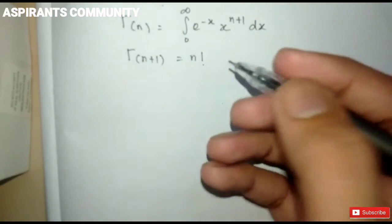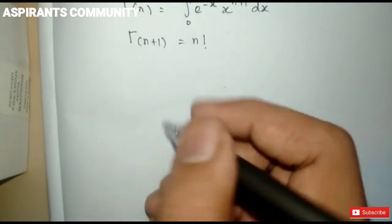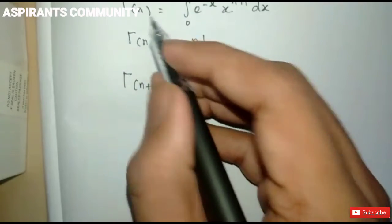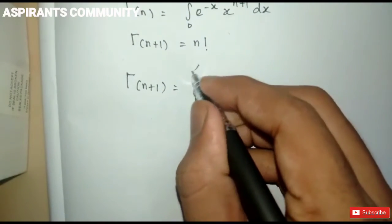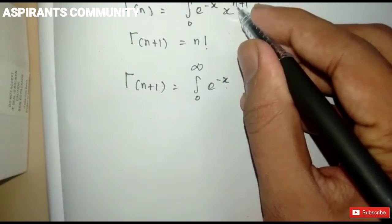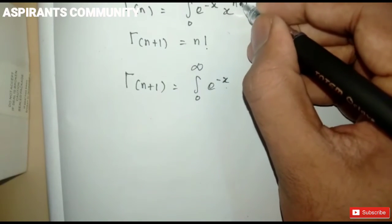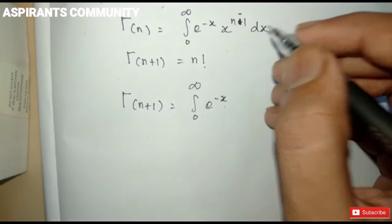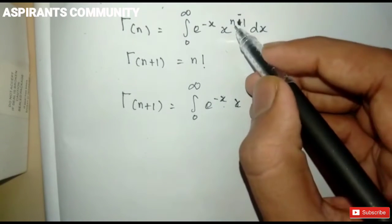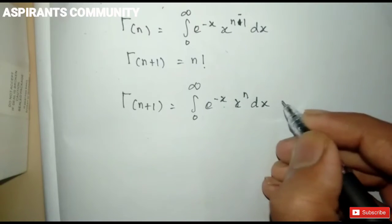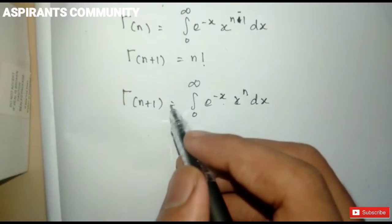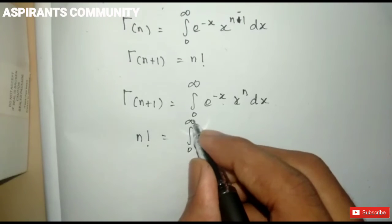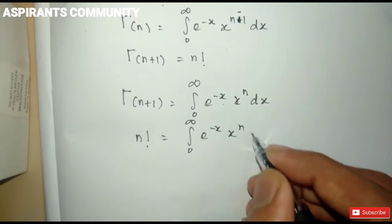So if gamma of (n plus 1) equals n factorial, we can apply it to find 0 factorial. We apply it with n equal to 0, so n factorial equals the integral from 0 to infinity of e to the power of minus x times x to the n dx. Therefore 0 factorial equals the integral from 0 to infinity of e to the power of minus x times x to the power of 0 dx.